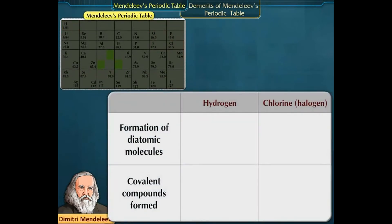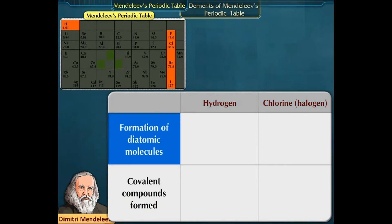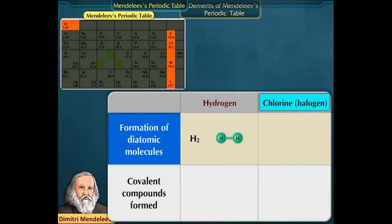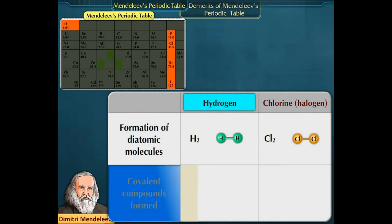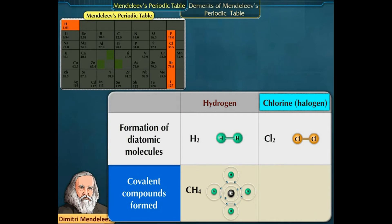Discussing the similarity between Hydrogen and Halogens: both Hydrogen and Halogens exist as diatomic molecules. Hydrogen exists as H2 and Chlorine, which is a halogen, exists as Cl2. Hydrogen forms covalent compounds like methane, and Chlorine also forms covalent compounds like carbon tetrachloride.